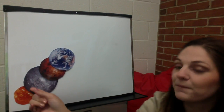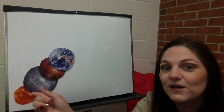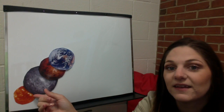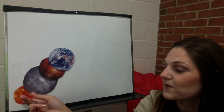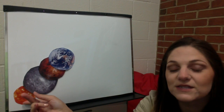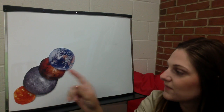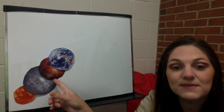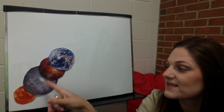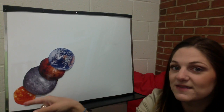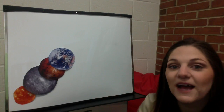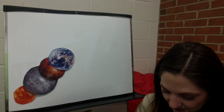So we have Mercury, which is the smallest planet and it's the first closest to the Sun. We have Venus, which is the hottest planet and it is the second closest to the Sun. And then third we have planet Earth.